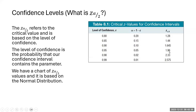Other common Z alpha over two values include 1.28, 1.44, and so on. These are all derived using that same strategy. The levels of confidence represented — 80, 85, 90, 95, 98, 99 — are the only percentages you will be asked to use. However, you do know how to derive them: if asked for 82%, you could figure it out using techniques from section 6.4. This chart is provided on the formula sheet, so there's no need to memorize it.